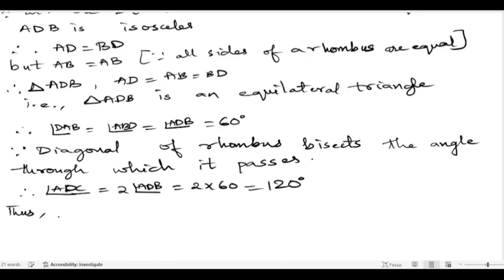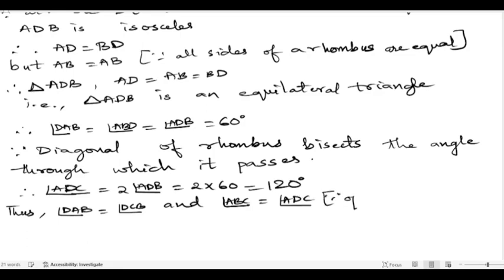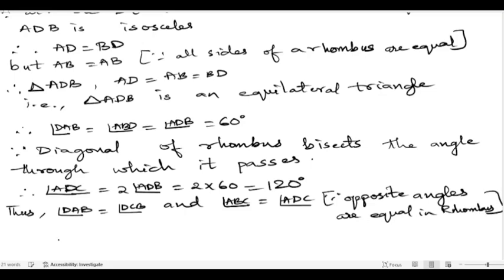Using the property that opposite angles of a rhombus are equal: angle DAB = angle DCB, and angle ABC = angle ADC. Therefore angle A = angle C = 60 degrees, and angle B = angle D = 120 degrees.